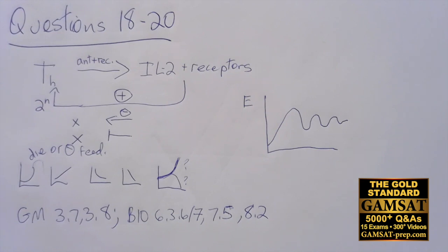So question 18 is a fantastic question, because the passage and the question is all about positive feedback. And the expression is never used. Positive feedback and negative feedback have been on every GAMSAT for 15 years. It always comes up in one way or the other. And this is an elegant way to bring it up.